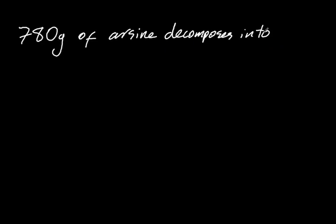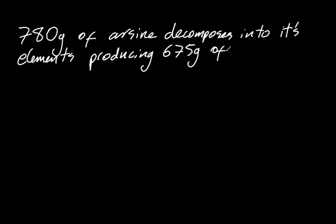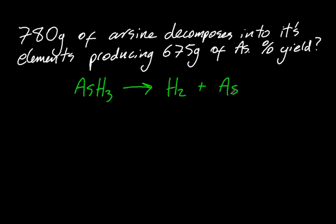Okay, let's look at an example. 780 grams of arsine decomposes into its elements, producing 675 grams of arsenic. So what's my percent yield? Well, you're not expected to know what arsine is. So there's the decomposition equation.